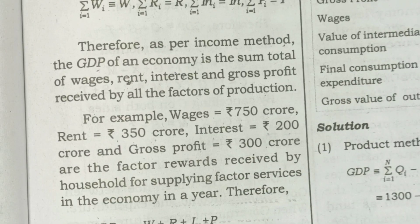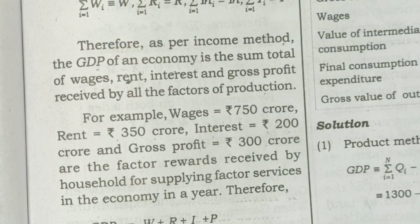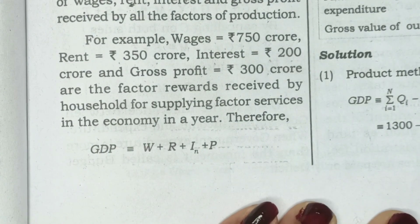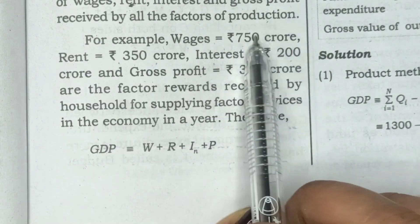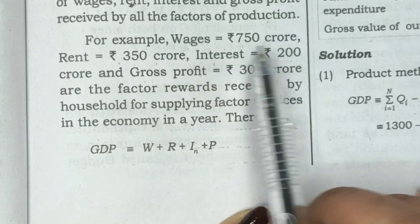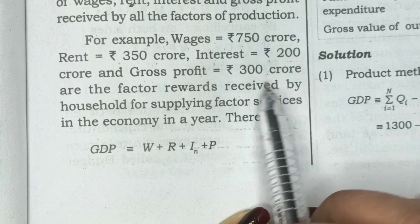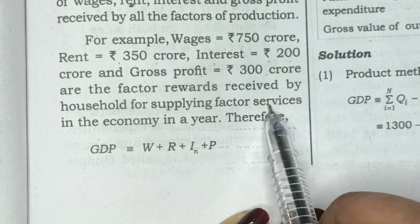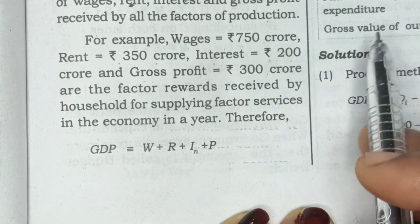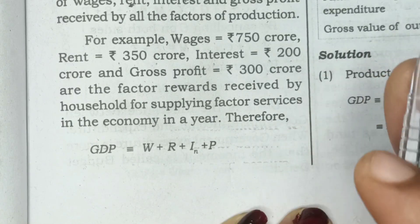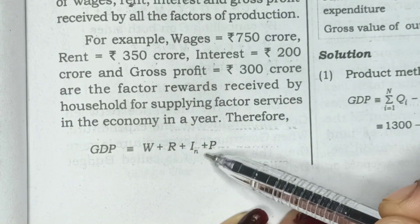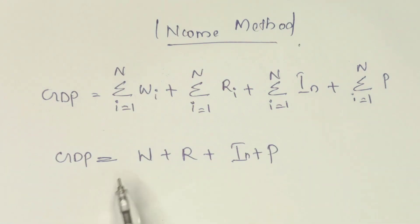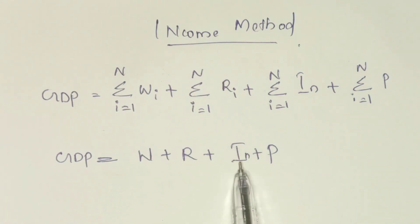Income method — how to work out this question: wages is 750 crore, rent is 350 crore, interest is 200 crore, gross profit is 300 crore. How to work out this in the economy — in the year, factor services and the factor income. So what we need to do is apply GDP = W + R + IN + P. So in the income method, GDP is calculated using this formula.